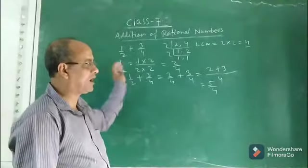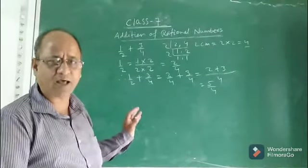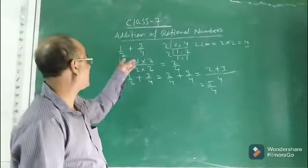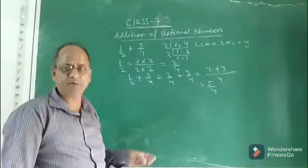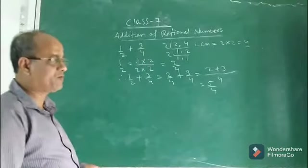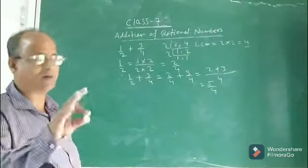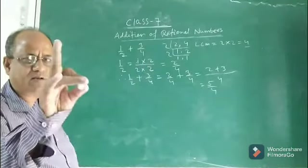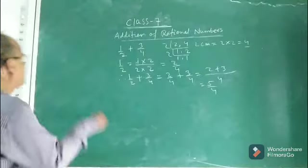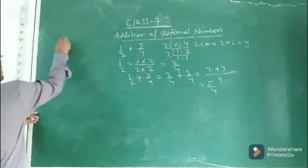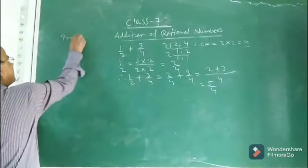So that is how to add rational numbers having different denominators. Now we will discuss one property — the properties of rational number addition. We will discuss one property today.